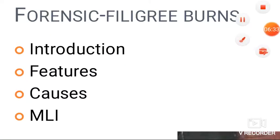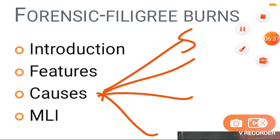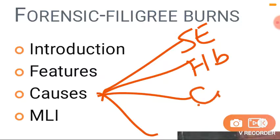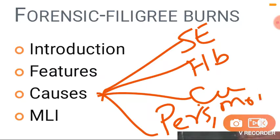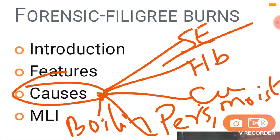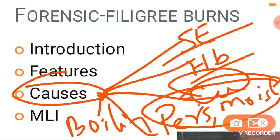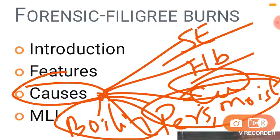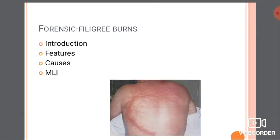To summarize the causes: static electricity, hemoglobin staining, copper deposits in the skin, electron shower causing inflammatory response, perspiration and skin moisture leading the current in a particular path, and boiling of intracellular fluids. These are the theories put forward for the causes of filigree burns.